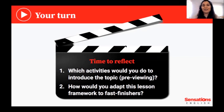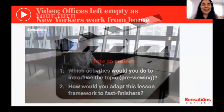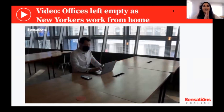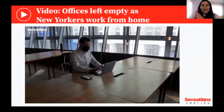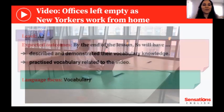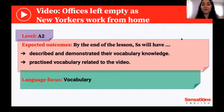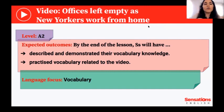The next video is 'Offices Left Empty as New Yorkers Work from Home.' It happens in New York, but I'm sure this is a similar situation in many cities. Before I show you the video, some information: the activities are designed for A2 students. You can choose the same video and use it with different students from A2 to C1 — there are different narrations, but the video is the same. I decided to choose A2 because apparently some teachers don't believe that beginner students can work with authentic videos, and I'm going to show you that they can.